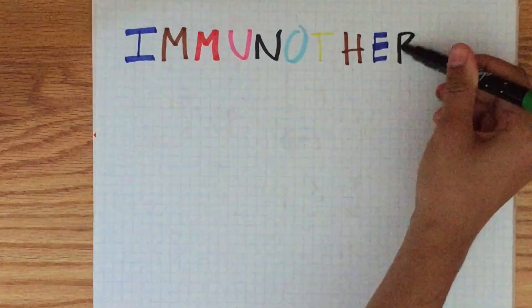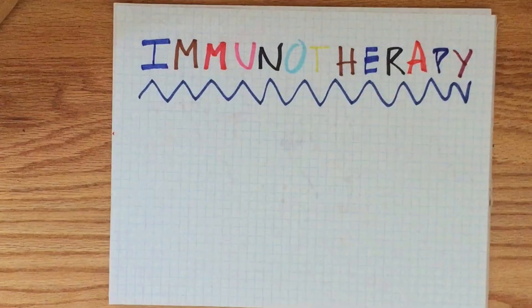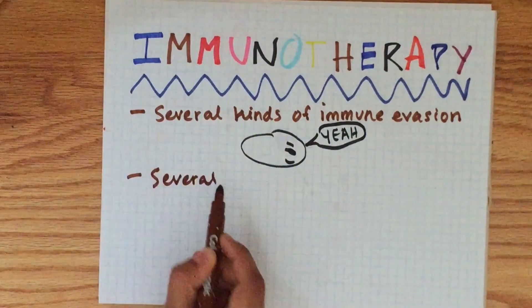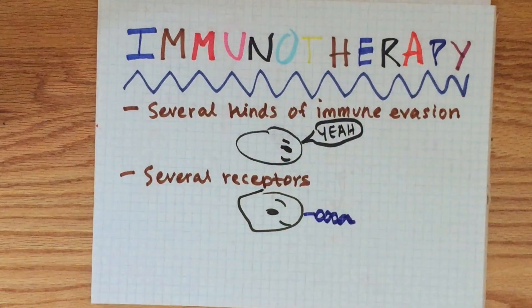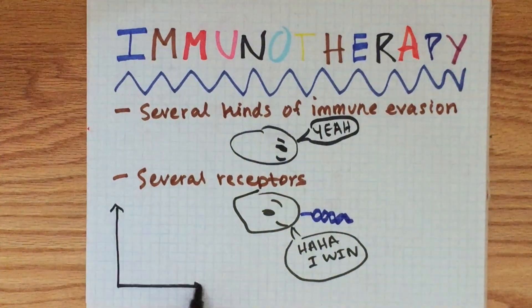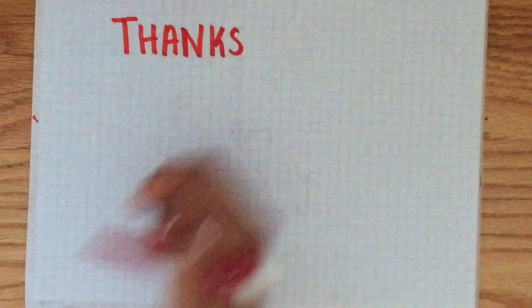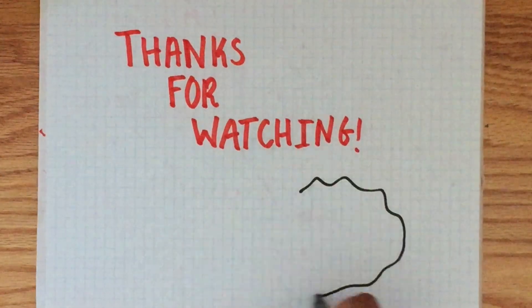This is what makes immunotherapy such a fascinating field in cancer research. Of course, this isn't the only type of immune evasion, and even in this type, there are several receptors which can promote T-cell apoptosis. But as research into this field continues, our knowledge gets deeper and deeper, and immunotherapeutic options get better and better. Thanks for watching!